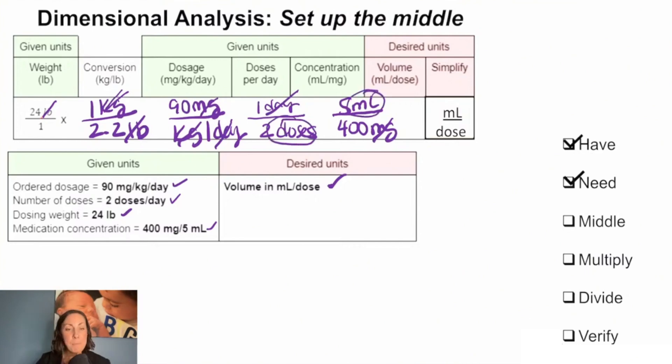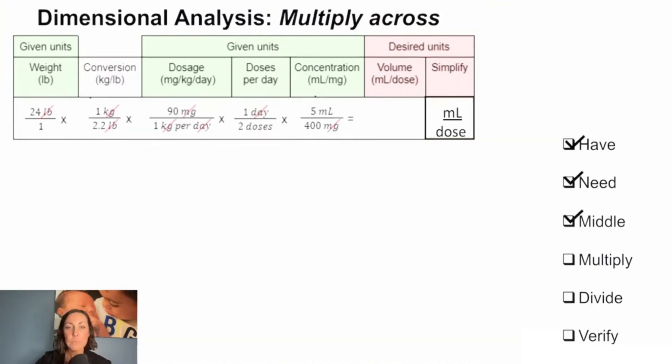Now that we've set up our middle, we are going to get to our next step, and that is going to be to multiply. We multiply across here - this is going to be bigger math for us: 24 times 1 times 90 times 1 times 5, so we get 10,800. Then we'll multiply across the bottom as well: 1 times 2.2 times 1 times 2 times 400, so we should get 1,760.